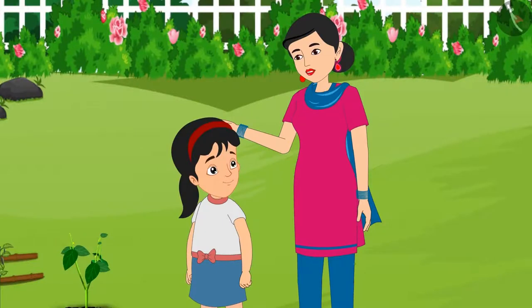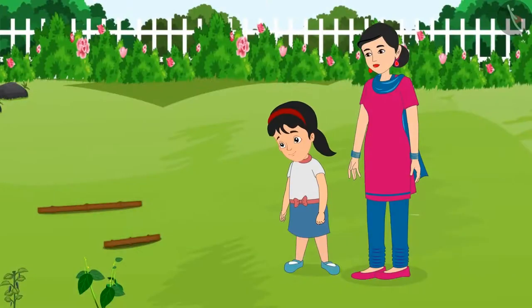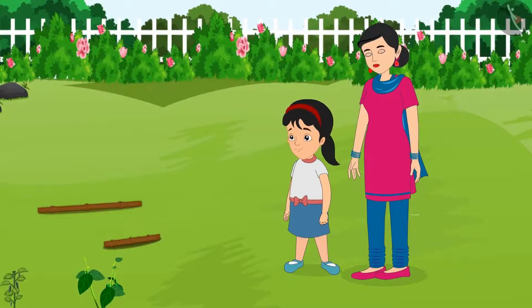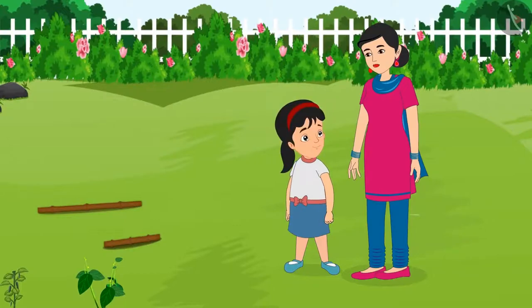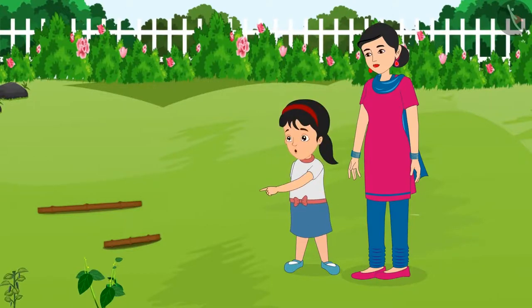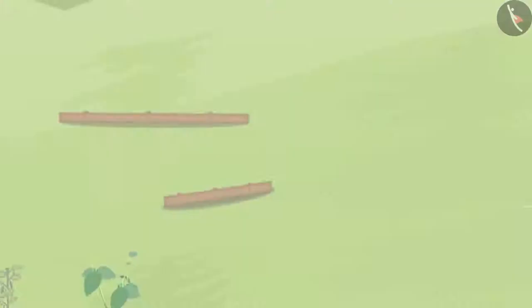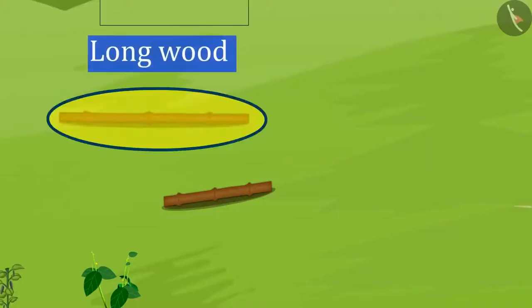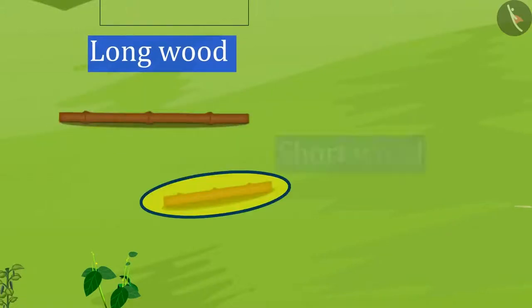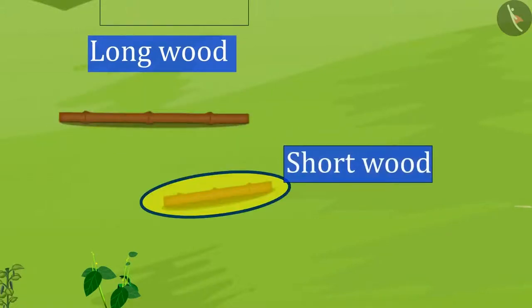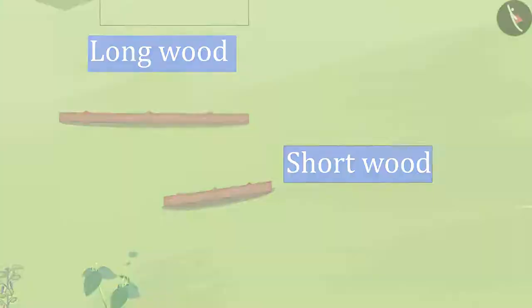Now look around and give me another example of a long object and a short object. Can you do that? Mummy, please look at these two sticks. Out of these, this stick is long and this stick is short. Right?